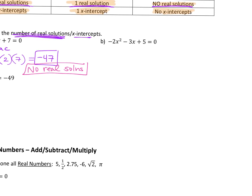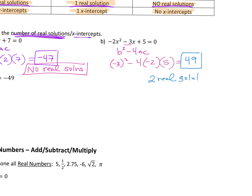Look at letter B. B squared minus 4AC is our discriminant. Take negative 3 squared minus 4 times negative 2 times 5. Plug that into your calculator — you get 49. But 49 is not your final answer. Your answer is two real solutions. If it's a positive number, you get two real solutions — or two X-intercepts.